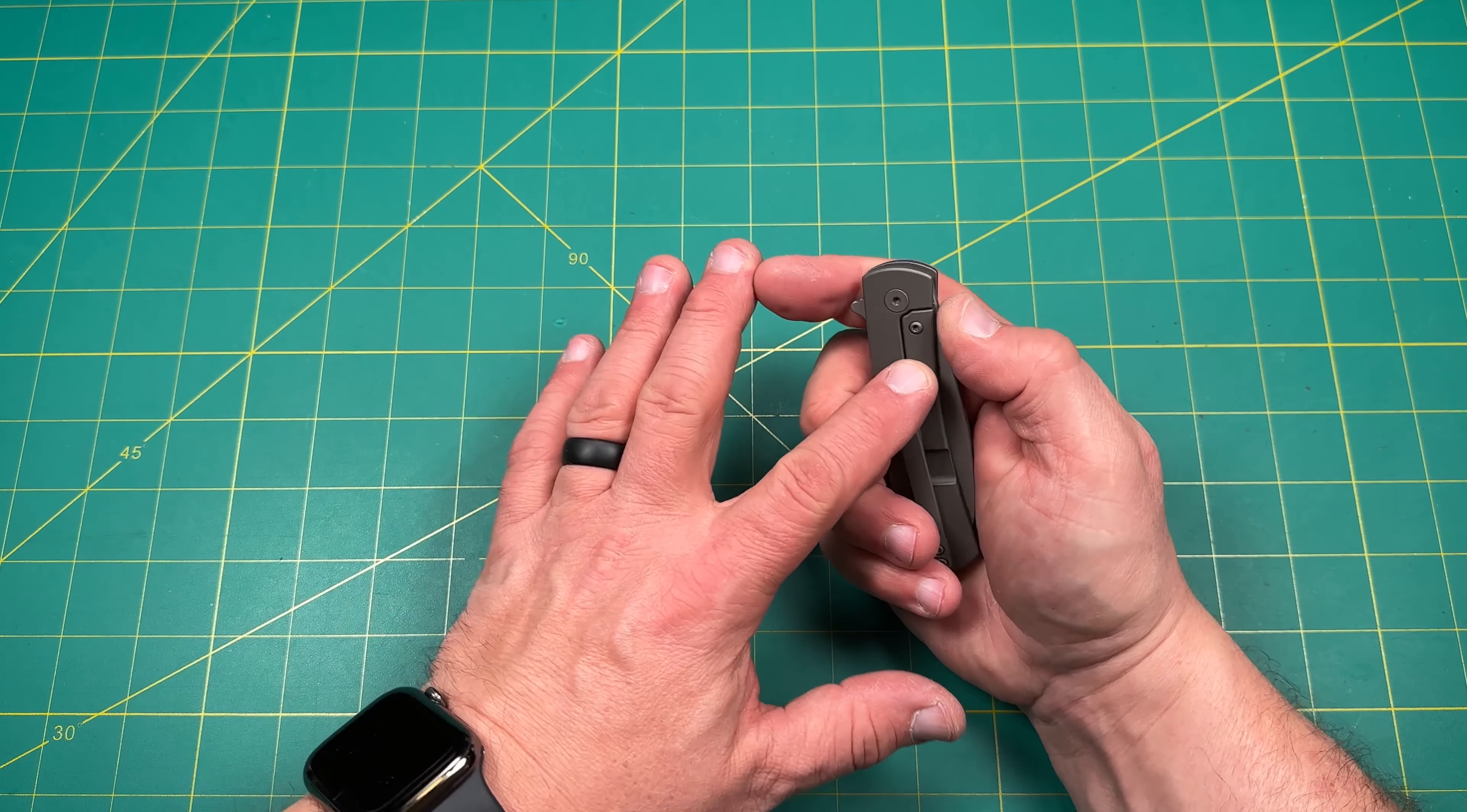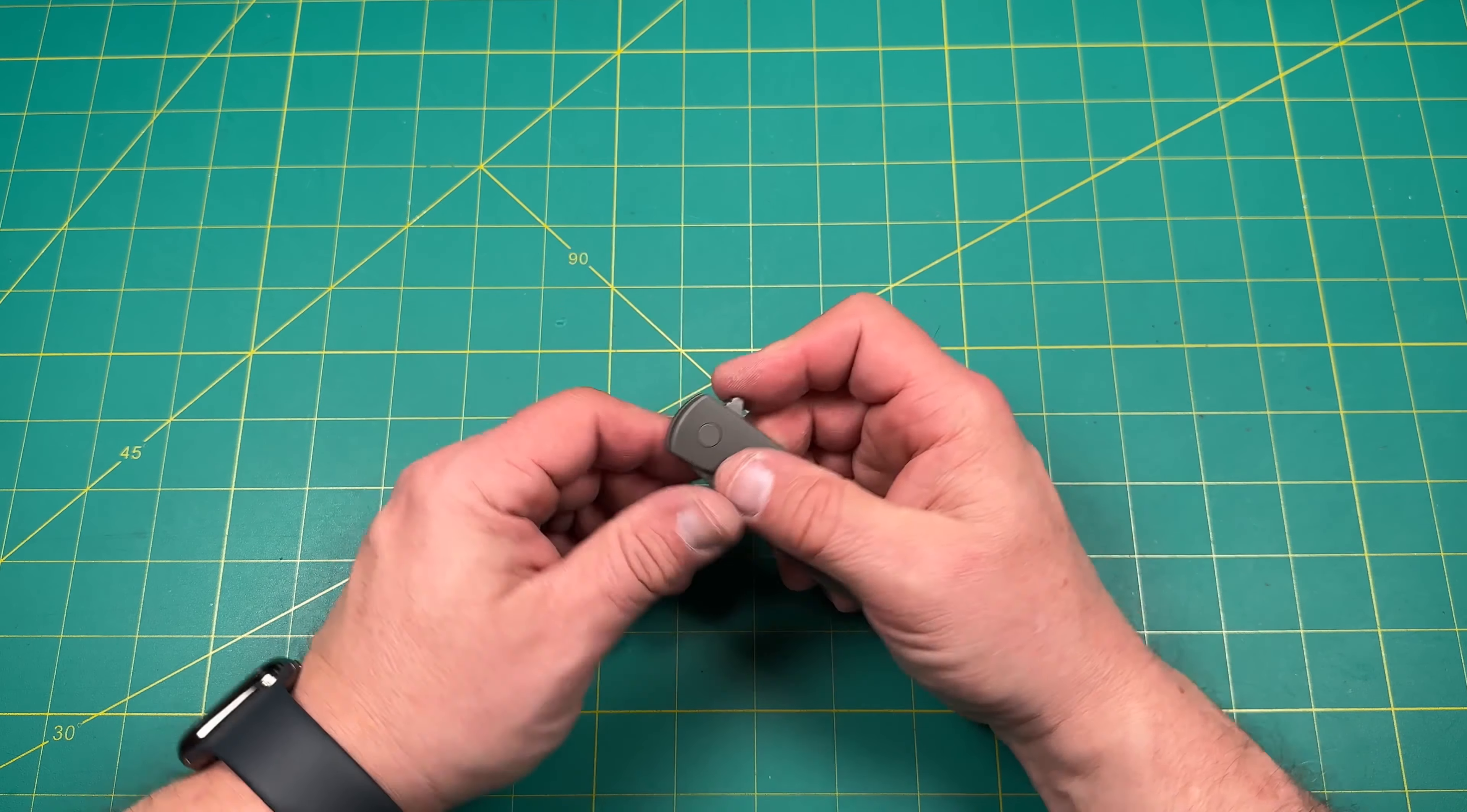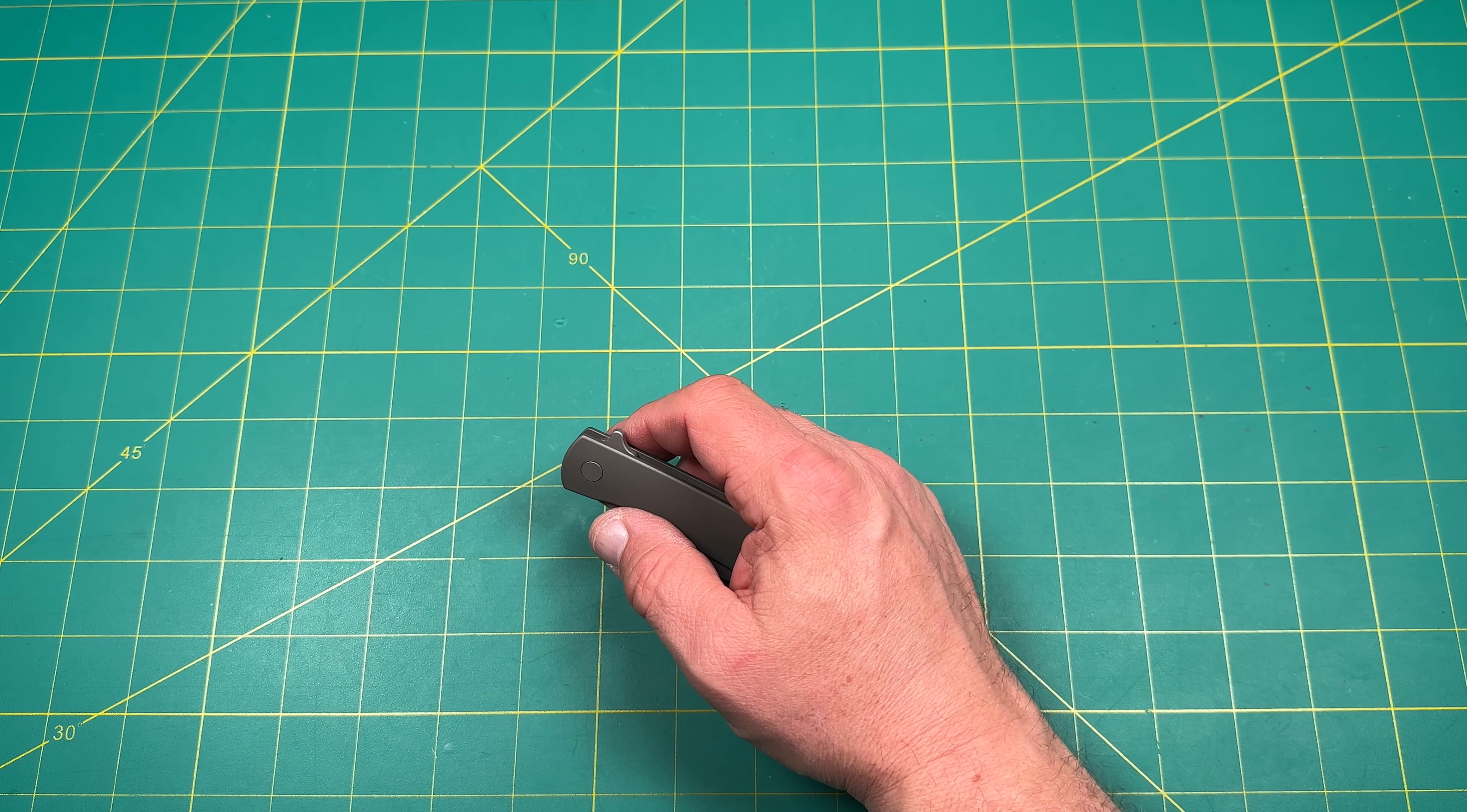It is a frame lock. We talked about that. Tang, the steel bar insert over travel stop. All that stuff is good. Let's get into the weight of this knife here and see how much this guy weighs.